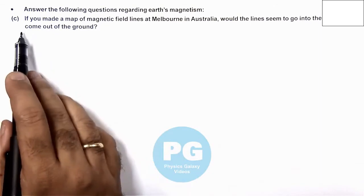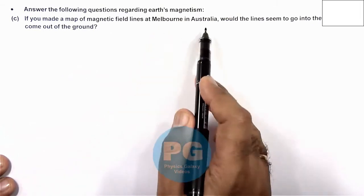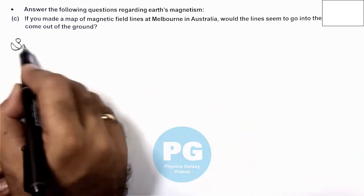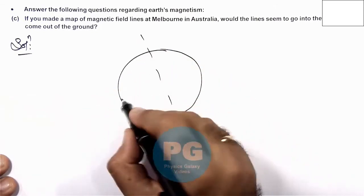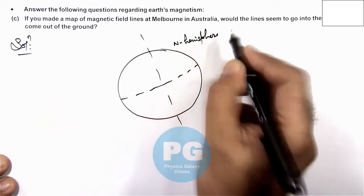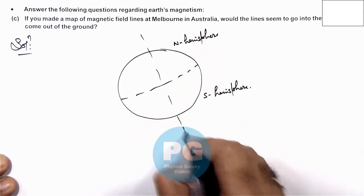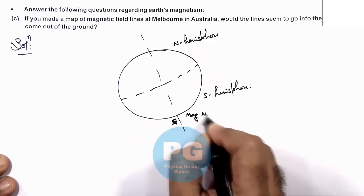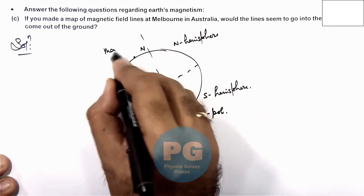If we talk about part C, where it is saying: if you made a map of magnetic field lines at Melbourne in Australia, would the lines seem to go into the ground or come out of the ground? In case of Earth, if this is the Northern Hemisphere and this is the Southern Hemisphere of Earth, close to the geographic South Pole of Earth there is the magnetic North Pole, and close to the geographic North Pole of Earth there is the magnetic South Pole.